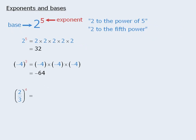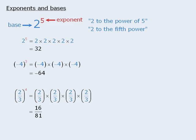Finally, the exponent in this expression directs us to take the base of 2 thirds and multiply it by itself 4 times. This equals 16 over 81, so 2 thirds to the power of 4 is equal to 16 over 81.